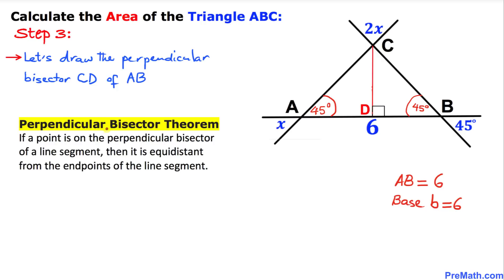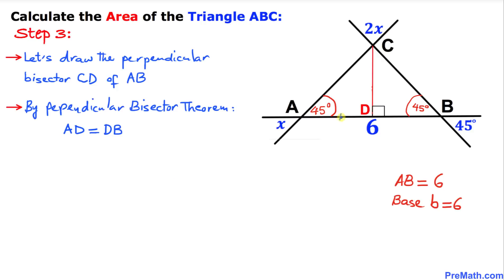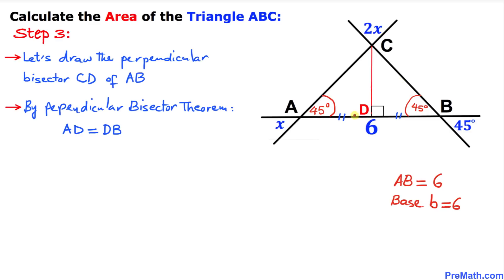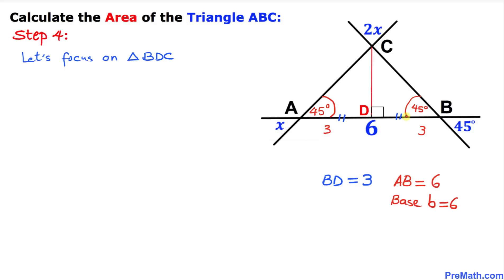Here is the perpendicular bisector theorem: if a point is on the perpendicular bisector of a line segment, then it is equidistant from the endpoints of the line segment. Therefore, line segment AD equals line segment BD, meaning AB is divided into two equal parts of 3 units each. So BD turns out to be 3 units. Now let's focus on right triangle BDC — this is a right triangle with a 90-degree angle at D and 45 degrees at B.